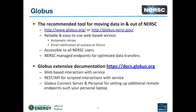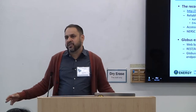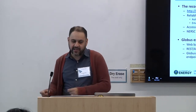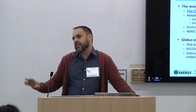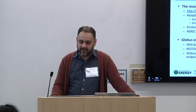Globus is probably the easiest way to move data in and out of NERSC. It's reliable and easy to use — basically a web interface where you drag and drop files. The nice thing is it's a managed transfer: if you move a folder, it'll move everything in the folder, keep track of what's moved and what hasn't, retry on failure, and at the end tell you which files succeeded and which didn't. You set off the transfer and go do your own thing — no need to keep a terminal window open.